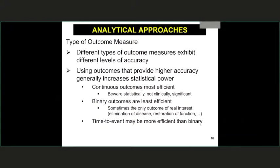The type of outcome measure plays into this as well. Different outcome measures have different levels of accuracy. In clinical situations, we might have a continuous endpoint and be tempted to dichotomize it, but dichotomizing requires greater power and you lose efficiency compared to a continuous measurement. Time to event would be somewhere in between. If you can use continuous outcomes, they tend to be the most powerful, as long as you understand the distributional assumptions. It's also important that statistical significance aligns with clinical significance.